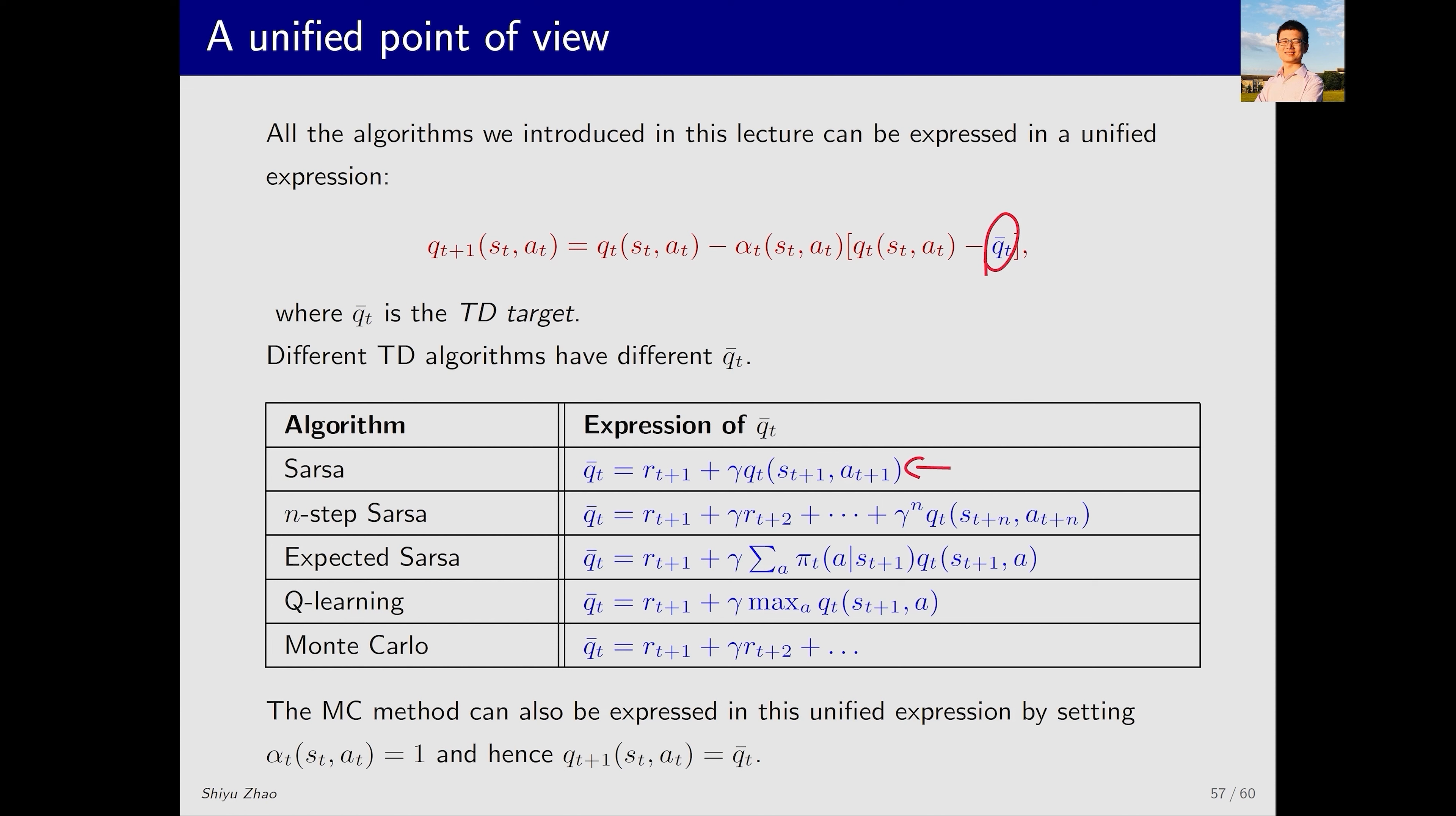For example, SARSA. The TD target of SARSA is R_{T+1} plus gamma Q_T(S_{T+1}, A_{T+1}). The TD target of n-step SARSA involves more decompositions, resulting in Q_T(S_{T+N}, A_{T+N}). Expected SARSA replaces A_{T+1} with an expectation over A in Q̄_T. Q-learning maximizes over A in Q̄_T. This is the TD algorithm we just introduced.